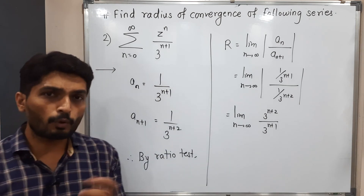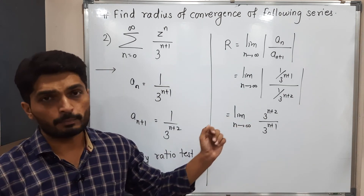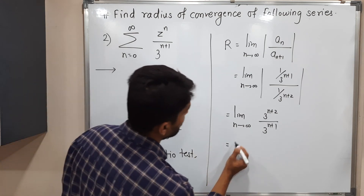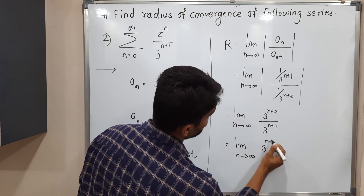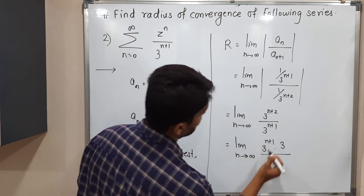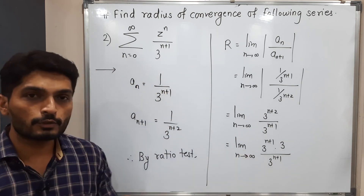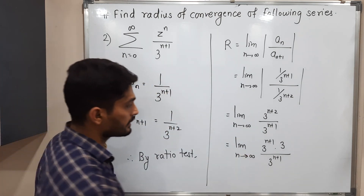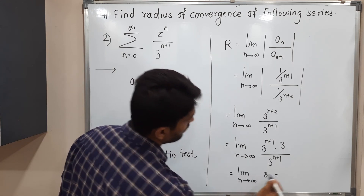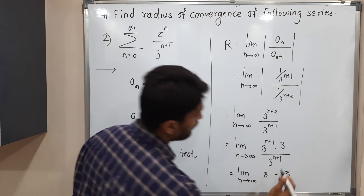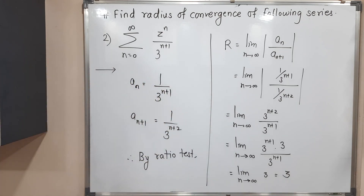Since all terms are positive the modulus is not required. We can write 3 raised to n plus 2 as 3 raised to n plus 1 multiplied by 3, and in the denominator we have 3 raised to n plus 1. The 3 raised to n plus 1 terms cancel, leaving the limit as n tends to infinity of 3, which is simply 3. So the radius of convergence of this series is 3.